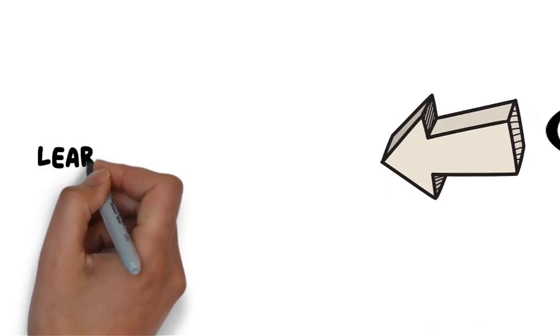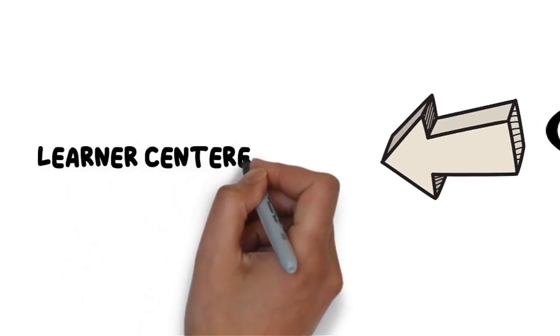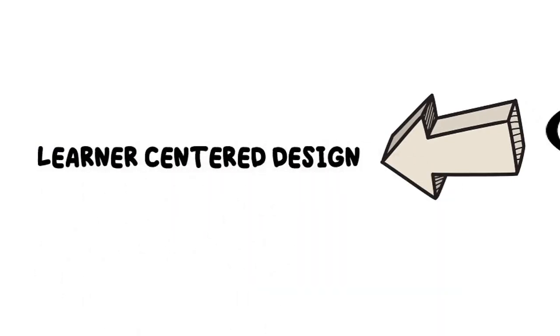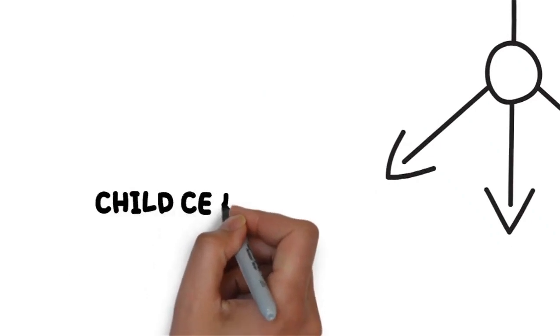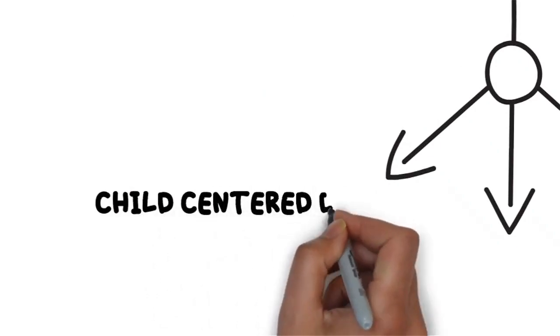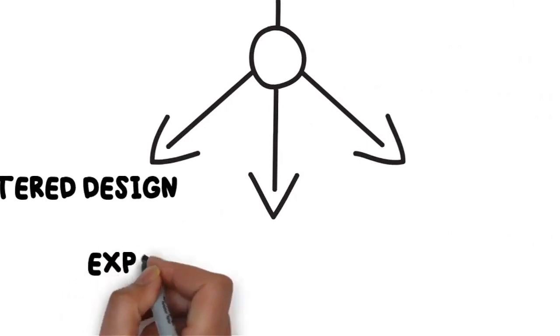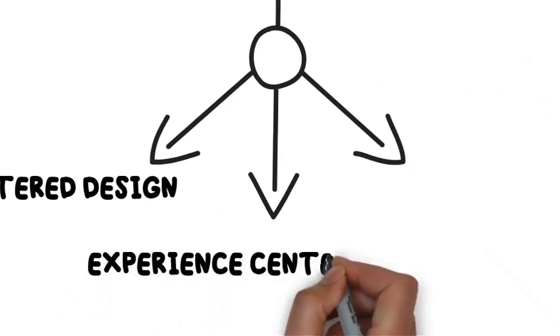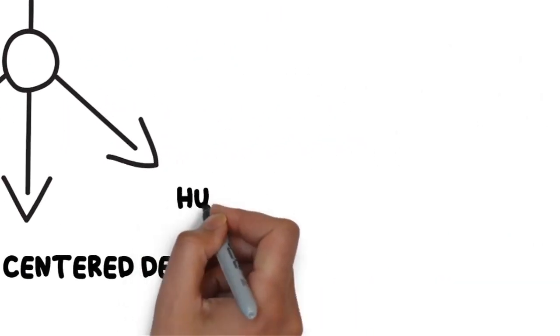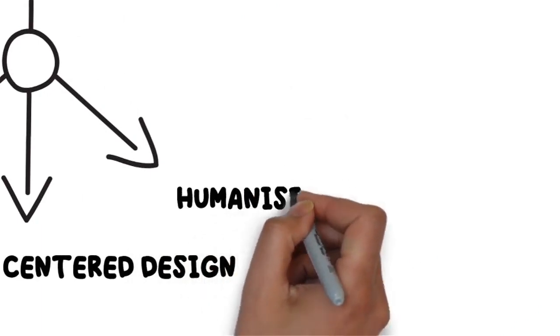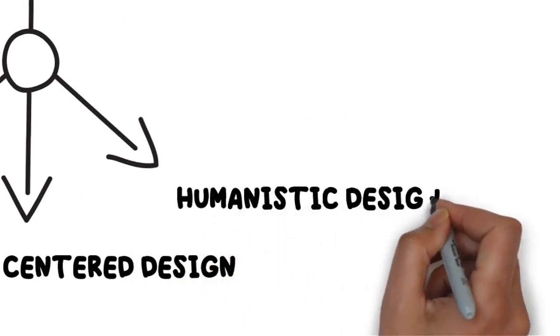The second type of design is the learner-centered design. The learner-centered design advocates that the learner should be the center of the educative process. It has three subtypes, namely child-centered design, experience-centered design, and humanistic design. The child-centered design is anchored on the needs and interests of the child. The experience-centered design is similar to the child-centered design. It proposes that the interests and needs of the learner cannot be pre-planned. The humanistic design, on the other hand, draws on the development of self as the ultimate objective of learning.